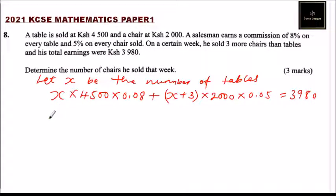If we multiply here - 4,500 multiplied by 0.08 - you'll get 360x. Then we have plus the other one: 2,000 multiplied by 0.05, you'll get 100. That is 100x, and the other one will give us 3 times 100, which is 300. This equals 3,980.